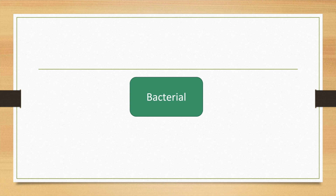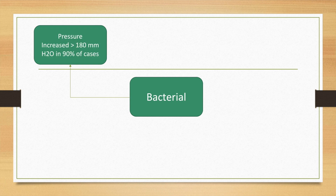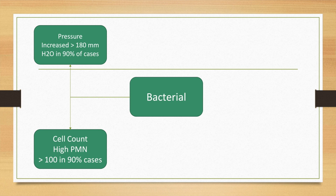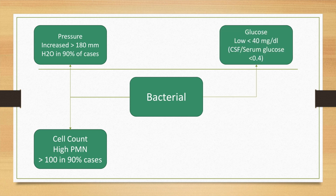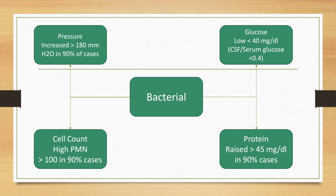In acute bacterial meningitis, the pressure is more than 180 millimeters of water in 90% of cases, and the cell count is high with polymorphonuclear cells greater than 100 in 90% of cases. The glucose is low — presumably because the bacteria consume the glucose — at less than 40 milligrams per deciliter, and the protein is raised at more than 45 milligrams per deciliter in over 90% of cases.